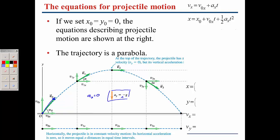The first thing you do when solving a projectile problem is break your velocity vector up into an x-component and a y-component. We now have a triangle, and we can use sines and cosines to solve for v₀x and v₀y in terms of the angle.